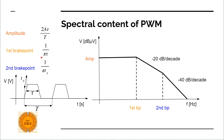The first breakpoint equation is 1 divided by π times tau. The second breakpoint is 1 divided by rise time or fall time, whichever is faster — typically they are the same. The first breakpoint depends on duty cycle, and the second breakpoint depends on rise time. We can shift the second breakpoint lower with a higher rise time.